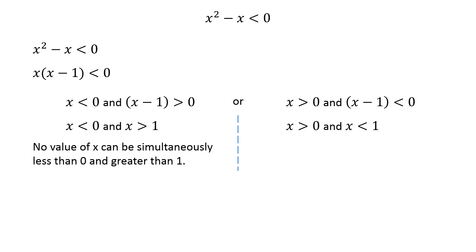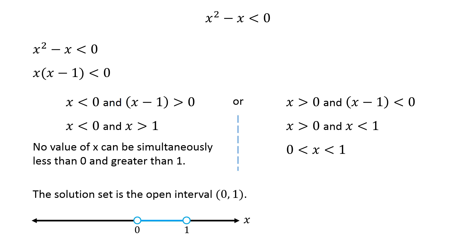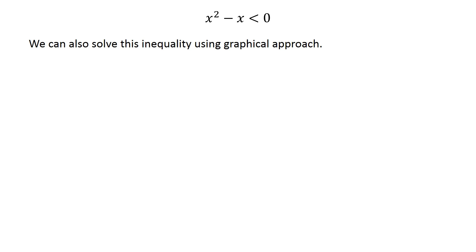In the second case, we have x is greater than 0 and less than 1, which implies that x lies between 0 and 1. All the numbers between 0 and 1 satisfy this case, and hence they satisfy the inequality. Thus the solution set of this inequality is the open interval from 0 to 1.